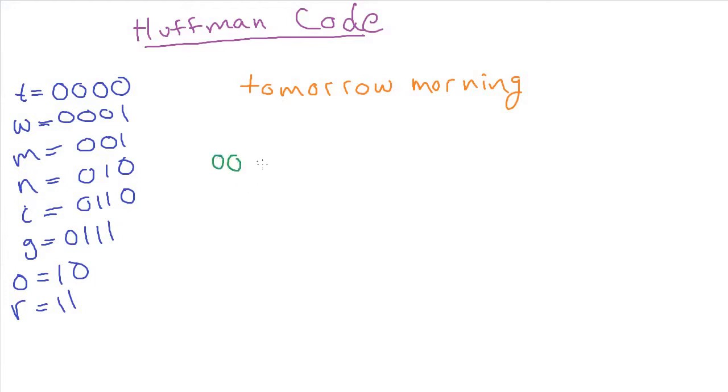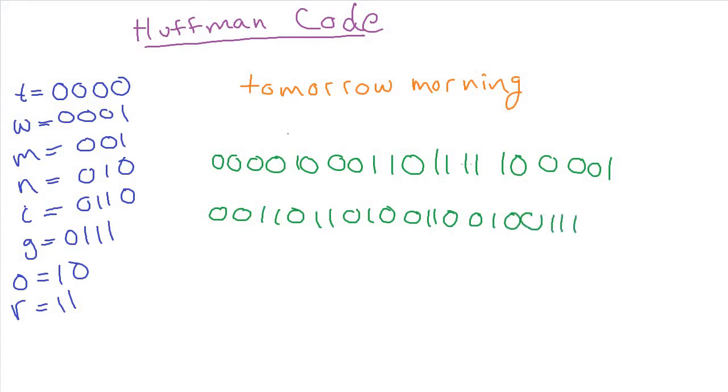For T, we would do zero zero zero zero. For the O, we do one zero. M is zero zero one. The next O is one zero. The R is one one. The next R is one one. Then the O is one zero and the W is zero zero zero one. So this is the encoding for the word "tomorrow." Then we can do the morning part, which would be zero zero one for the M, one zero for the O, one one for the R, zero one zero for the N, zero one one zero for the I, zero one zero again for the N, and then finally for the G, zero one one one.